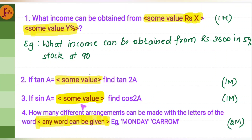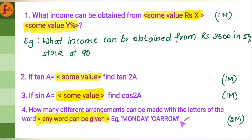In trigonometry 1 markers, you might be asked: if tan A is something, find tan 2A; or if sin A is something, find cos 2A. If you can remember the tan 2A, cos 2A, and sin 2A formulas, you can easily get these 1 markers. Another 1 marker comes from permutations and combinations — in the 2 marker section, a word like Monday, committee, or similar will be given and you have to find the number of ways it can be arranged. Practice the playlist to differentiate when to apply multiplication, addition, permutation formula, or combinations formula.